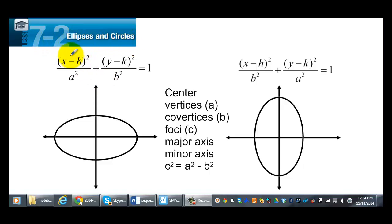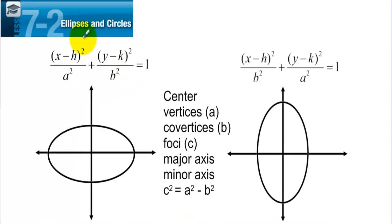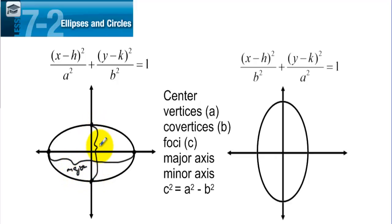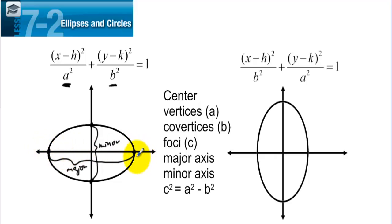7-2: Ellipses and circles. We have the equation of an ellipse when the major axis is horizontal — when you go from left to right horizontally across the ellipse, that distance is farther than going up and down. That shorter direction is called the minor axis. The major axis is horizontal because 'a', usually the bigger value, is under the x. The points at the endpoints of the major axis are called the vertices.